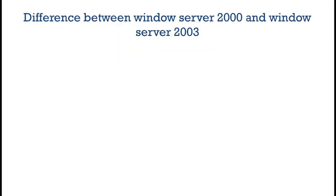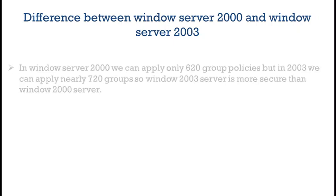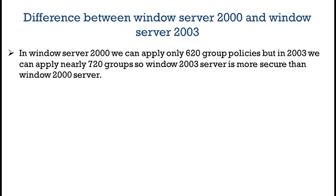The basic differences are following: in Windows Server 2000, we can apply only 620 group policies. But in Windows Server 2003, we can apply nearly 720 groups. So, Windows Server 2003 is more secure than Windows Server 2000.